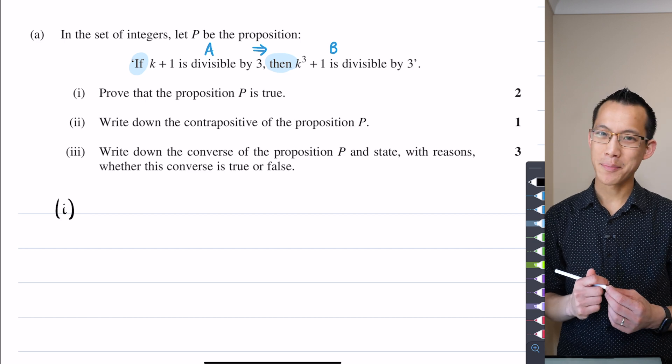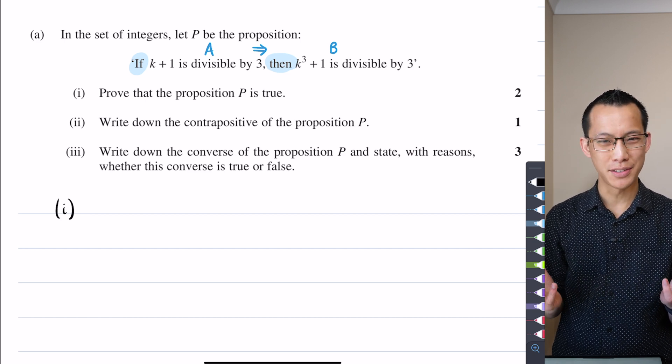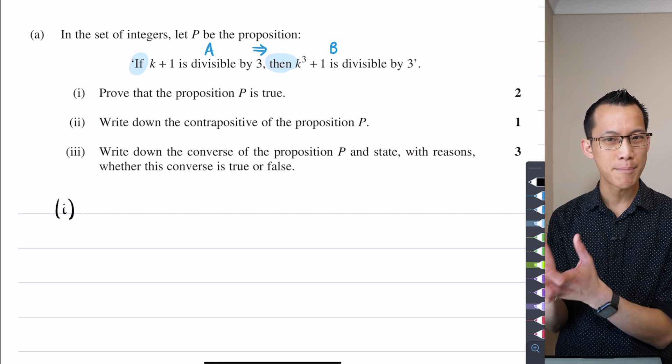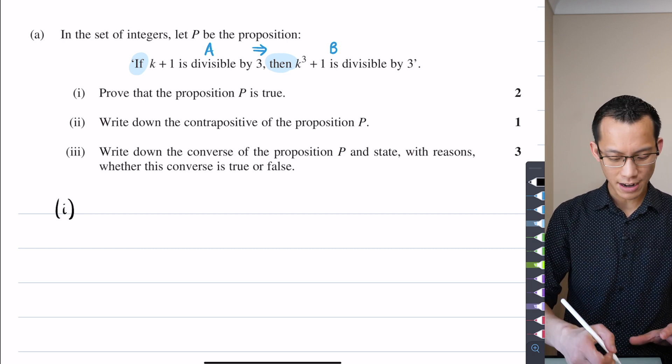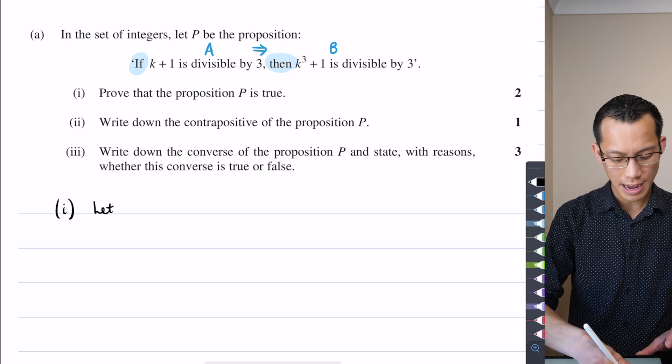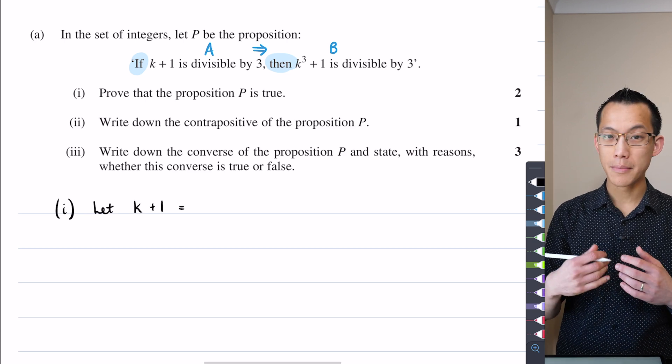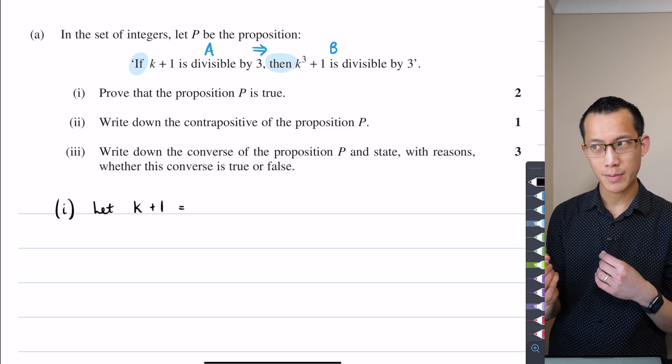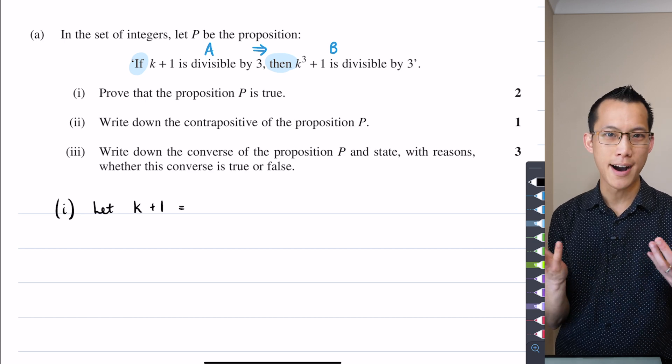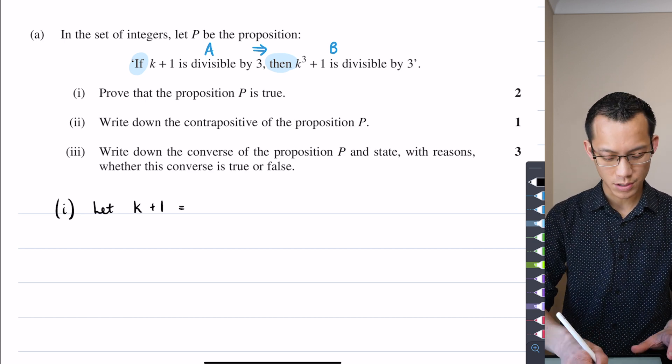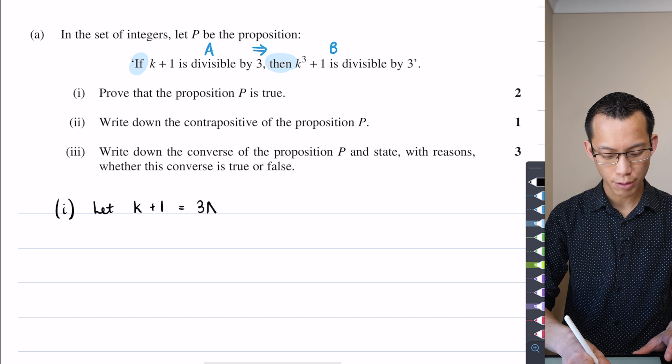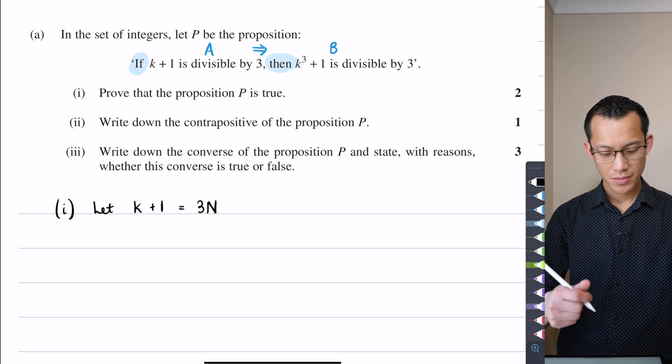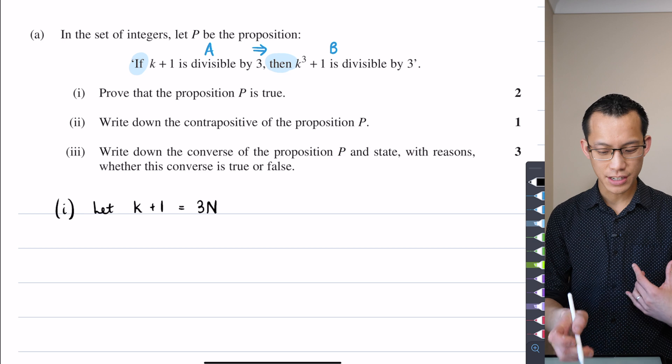Where am I going to begin? Just like a normal divisibility thing, if k plus 1 is divisible by 3, I can state that algebraically. I can say let k plus 1 be equal to some multiple of 3. To be divisible by 3 and to be a multiple of 3 are synonymous in this context. So let's call that 3n, where both k and n are integers.